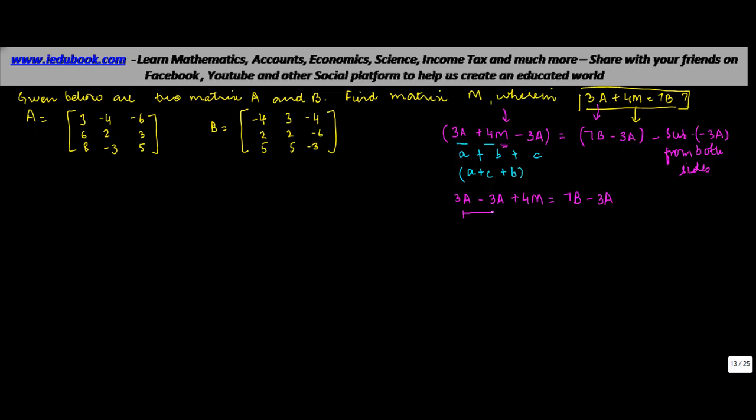Now if you notice, minus 3A is nothing but the additive inverse of 3A. And we know that a particular matrix when added to its additive inverse will give you 0 plus 4M is equal to 7B minus 3A. Or you can say that M is equal to 7B minus 3A.